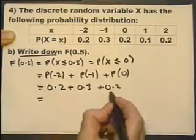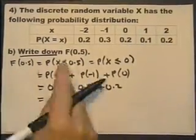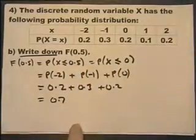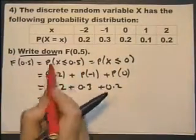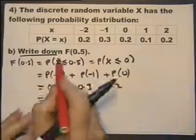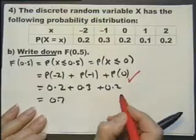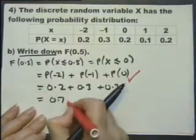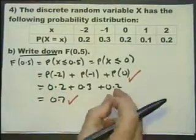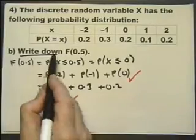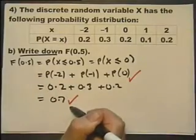The question says 'write down,' which implies you could do this without showing any working at all — you could do it in your head. You get the two marks just for writing down the answer. However, even though the examiner is suggesting you don't need to show working, there's nothing to stop you writing it down, because then you could get a method mark if something goes wrong, and an accuracy mark if you get it right. So show working out even when the examiner says you don't need to, because it could be to your advantage.